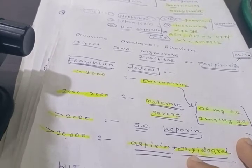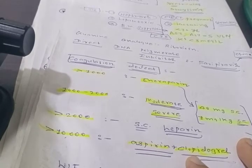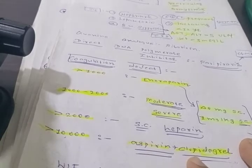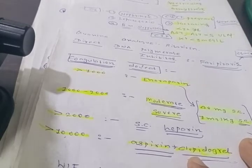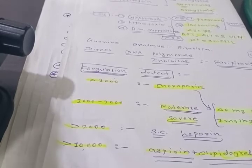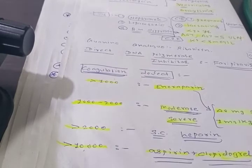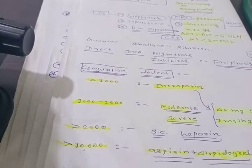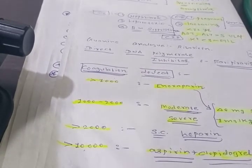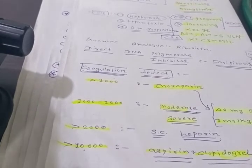If it is more than 5000, we have to change over to subcutaneous heparin. If it is more than 10,000, then it must be suggested that very rapidly coagulation system is working in the body, so we have to add aspirin and clopidogrel. We are doing D-dimer as per the test and giving treatment accordingly, as the virus is attacking.